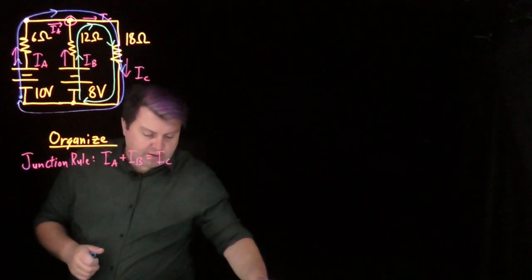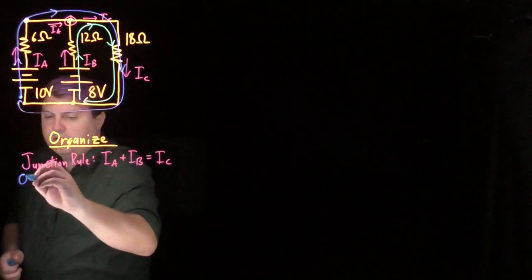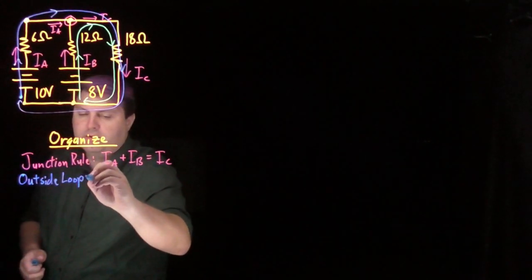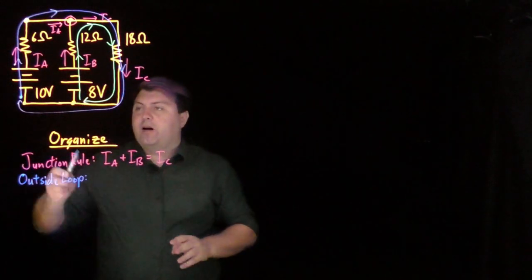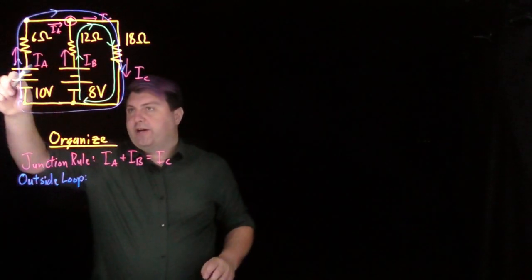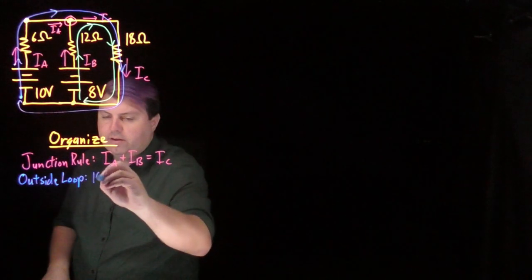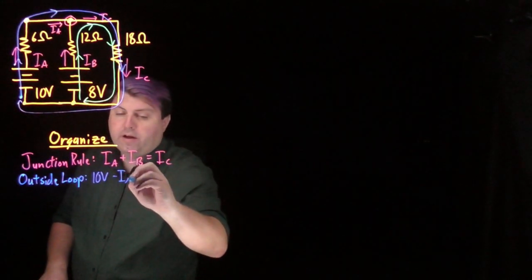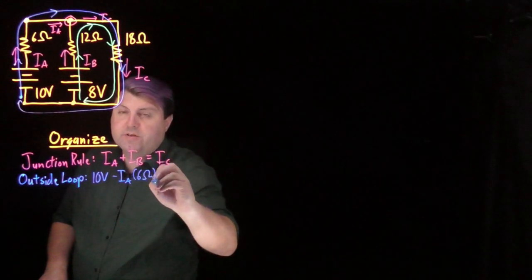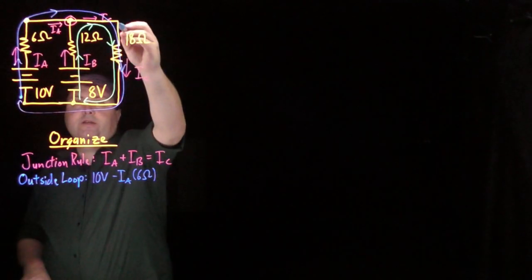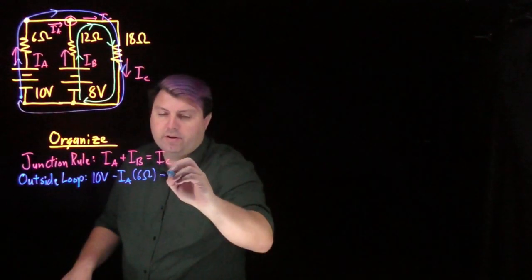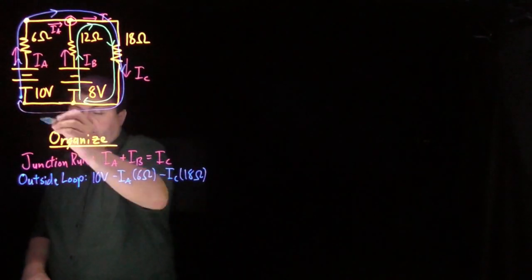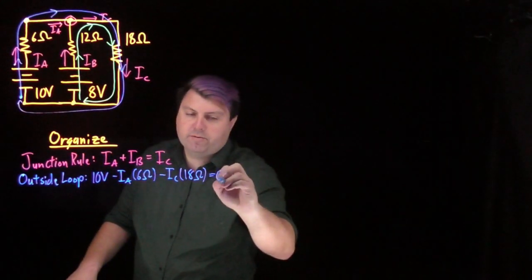I have my outside loop, so on my path from my outside loop, my first thing I go over is the 10 volt battery. Then I go over Ia times 6 ohms, then I continue over conductors, and then I go over Ic times 18 ohms. And then I get back to where I started, which means I can say it equals 0.